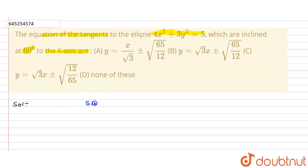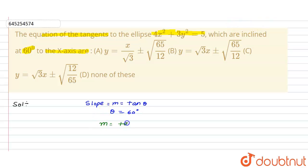We know that slope is equal to m = tan(θ). Here θ is given as 60 degrees. Putting this value, we get m = tan(60°). We know that tan(60°) = √3, so m = √3.